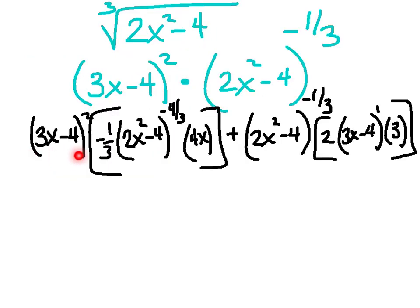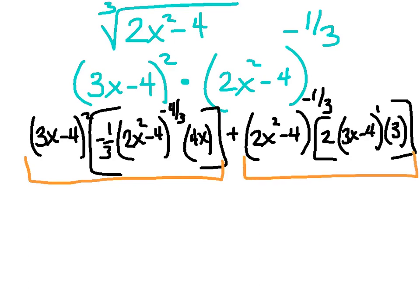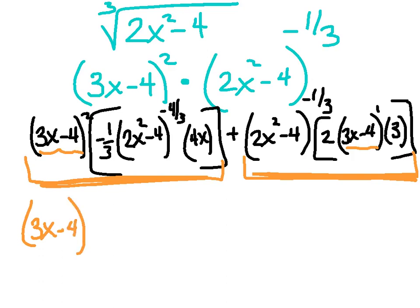Verify with me: first times derivative of the second — bring the exponent down, keep the inside, negative 1 third minus 1 makes negative 4 thirds, times the derivative of the inside which is 4x. Plus the second term, derivative of the first: bring the 2 down, keep the inside to the first, times the derivative of the inside. Bracket the first quantity and the second. You're looking for a GCF between the two terms. You'll see two common factors: 3x minus 4, and the quantity 2x squared minus 4.